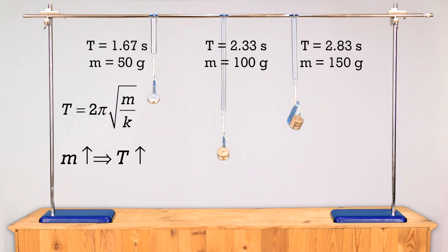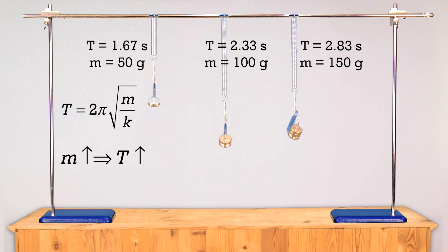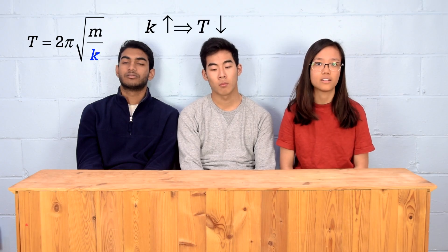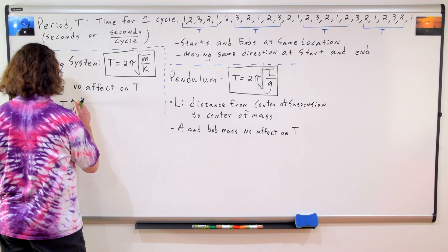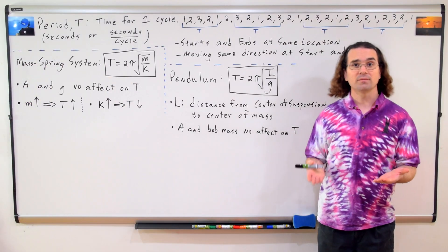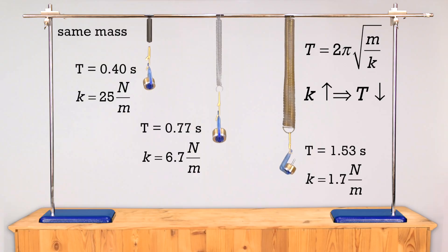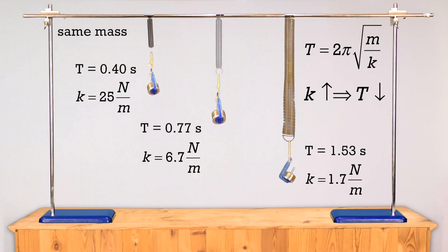Olivia, what happens to the period of a mass-spring system if we increase the spring constant? Because the spring constant is in the denominator, increasing the spring constant will then decrease the period. That's right. As you can see, an increase in spring constant decreases the time it takes for one full cycle.